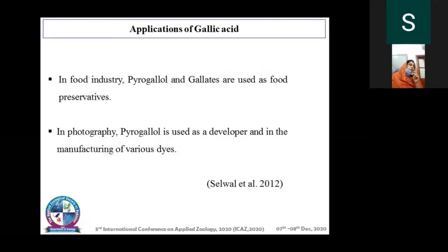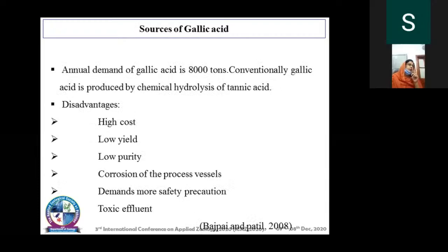The major applications of gallic acid are in the pharmaceutical industry — it is used as a precursor of trimethoprim, an anti-oxidative agent, anti-diabetic, anti-hypolipidemic, anti-cancer agent, and it is beneficial for muscles. The majority of gallic acid produced is used in the food industry as a food preservative because of its antioxidant properties. In photography, it is used as a developer and also in manufacturing of various dyes.